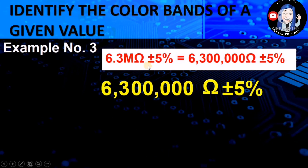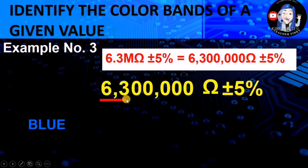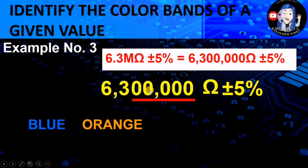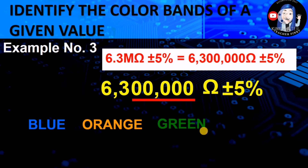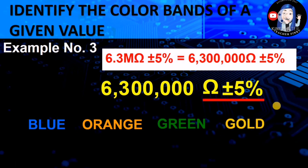A more difficult one: 6.3 megaohms plus/minus 5% equals 6,300,000 ohms plus/minus 5%. When we expand the value, we notice many zeros, making it easier to identify the colors. The first color — 6 — is blue; 3 is orange. There are 5 zeros, so the multiplier is green, because green in the multiplier has a value of 100,000, which has 5 zeros. Green in the first and second digit also has a value of 5. The tolerance is gold. So for 6.3 megaohms plus/minus 5%, the color combination is blue, orange, green, and gold.